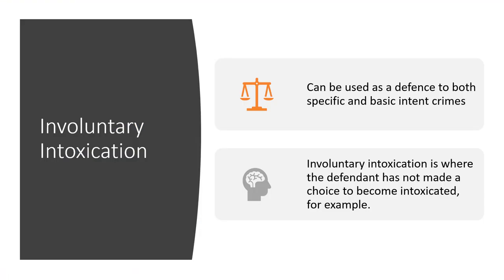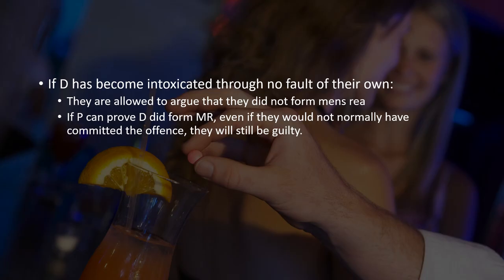Involuntary intoxication is when a person becomes intoxicated because they do not know the strength of what they are taking, or it is a prescribed drug whose effect they do not know. This defence can be used for both specific and basic intent crimes, because the person is not reckless in committing the crime, nor is becoming intoxicated a reckless course of conduct. If someone spikes a drink, for example, the person is not taking the intoxicant voluntarily.